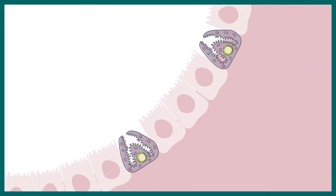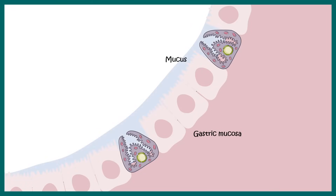Now let's understand the ulceration process in a bit more detail and how Helicobacter pylori can survive in the harsh environment inside the stomach. Here is the gastric mucosa, and you can see the mucosal lining which contains several epithelial cells and other cell types. There is a thick layer of mucus, and beyond that layer there would be gastric HCL in the stomach.